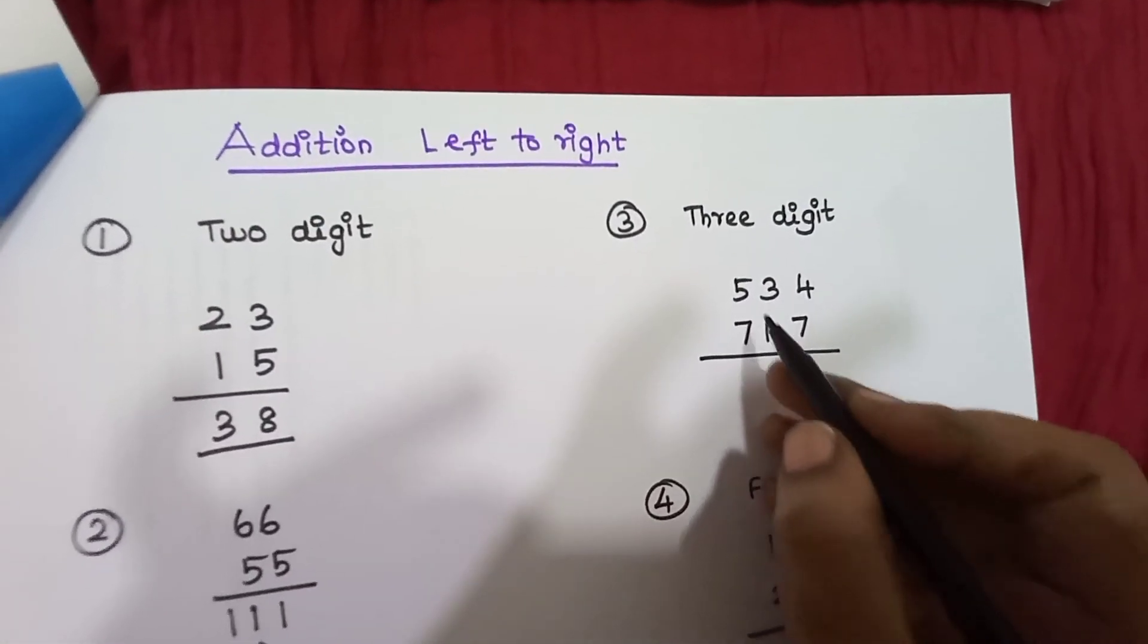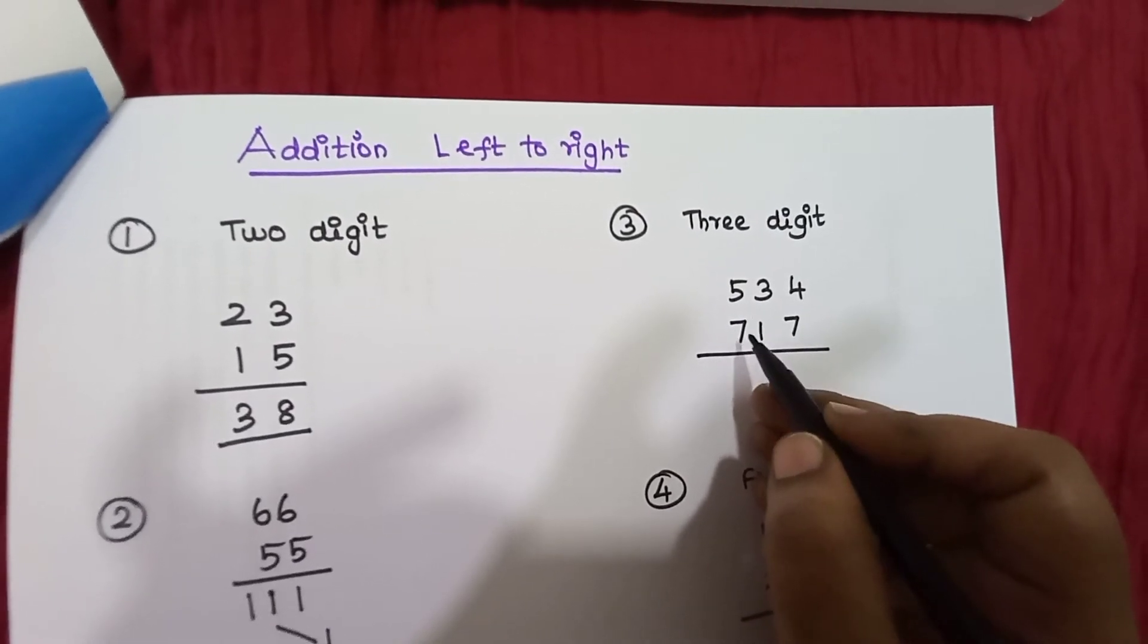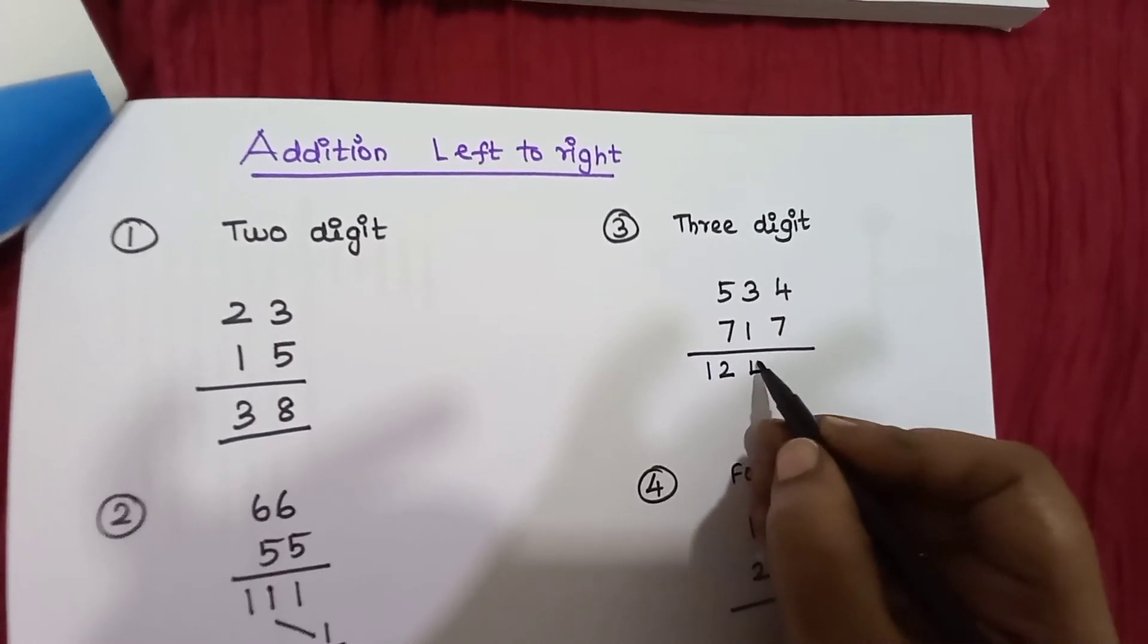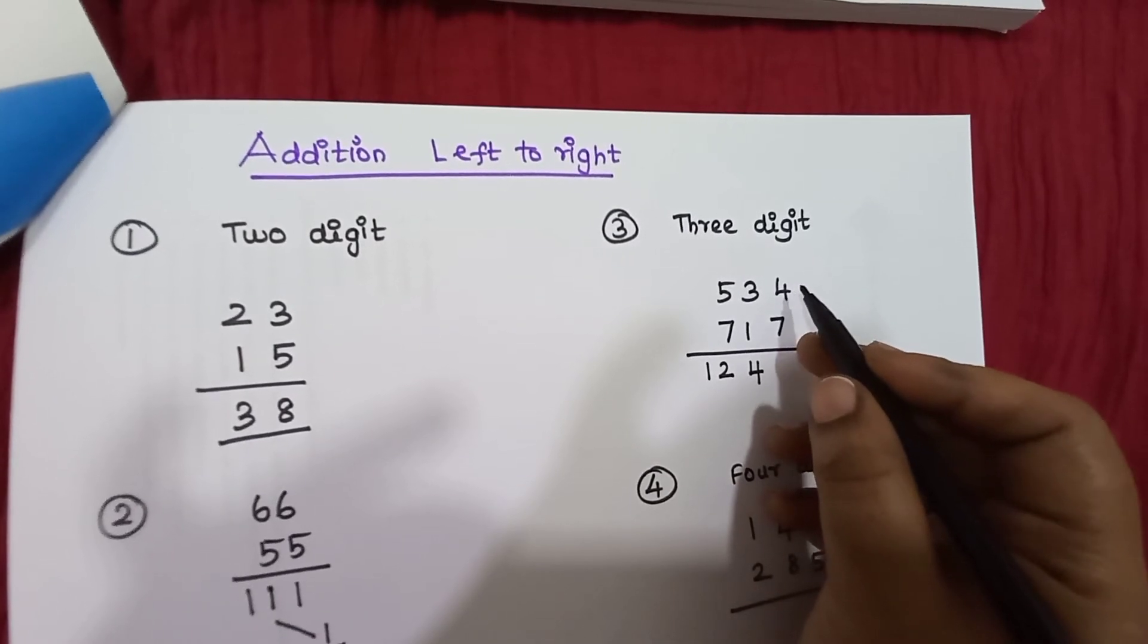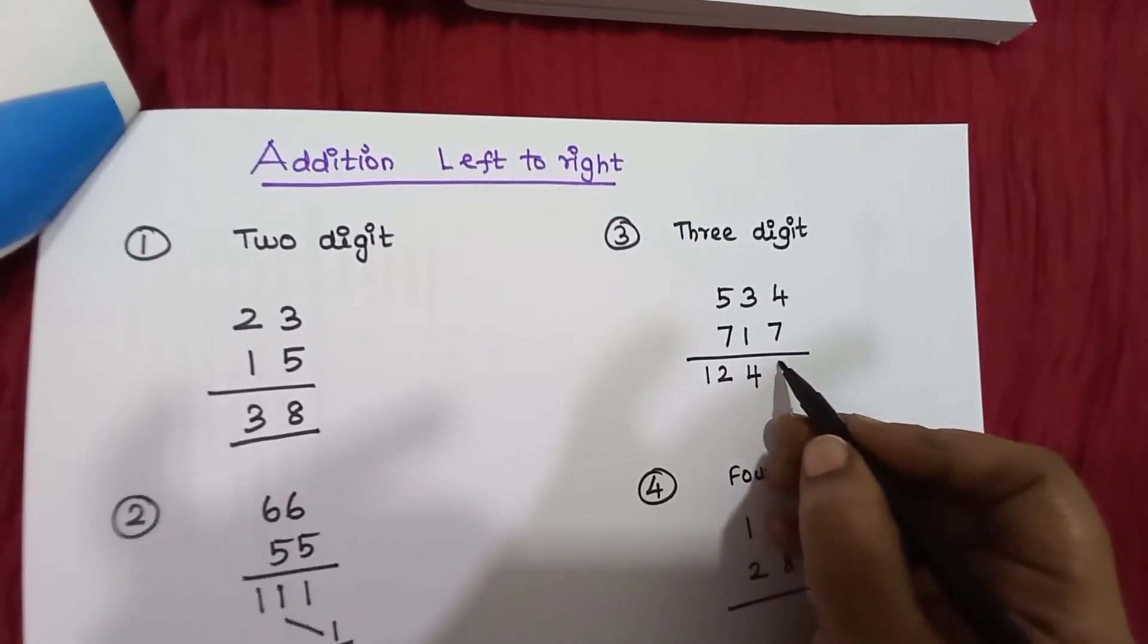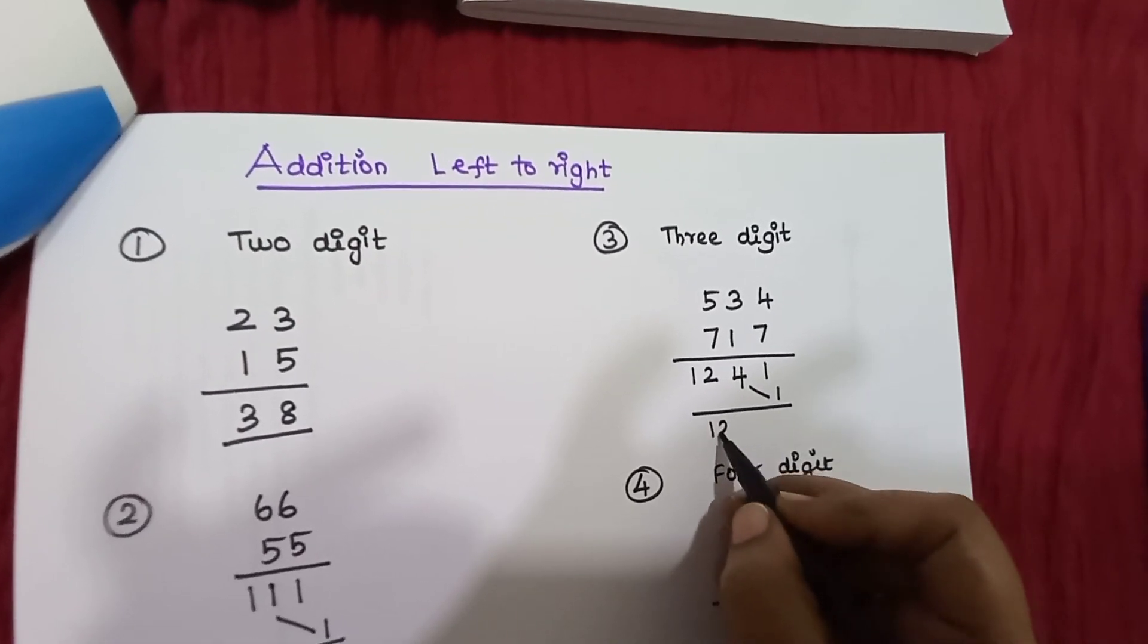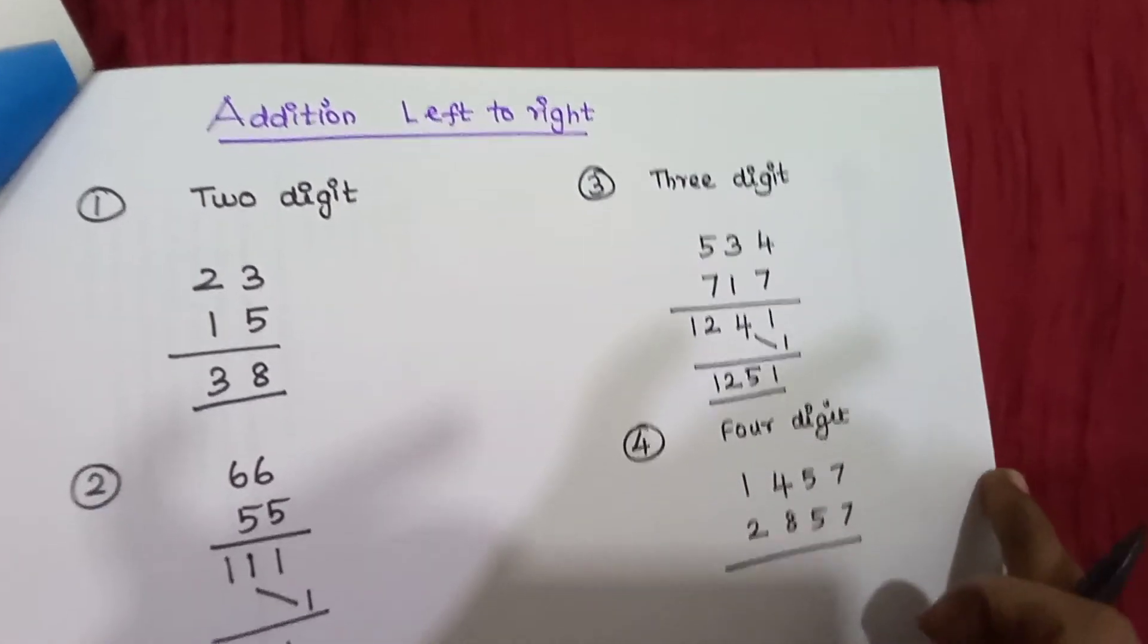Now a 3-digit number. 5 plus 7, 10, 11, 12. Then 7 plus 3, 10, 10 plus 1, 11, add 1, 1251.